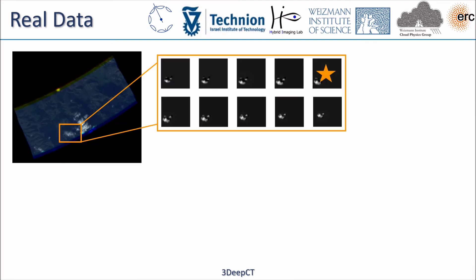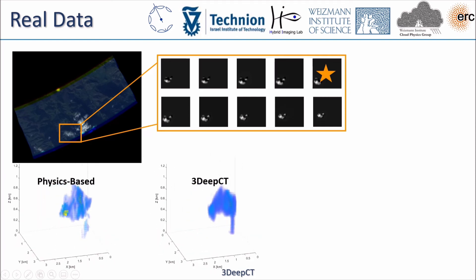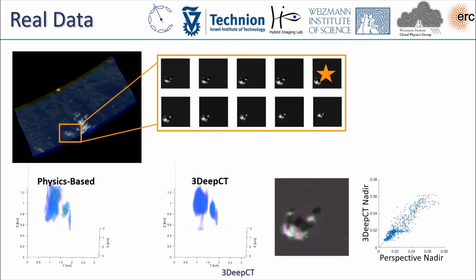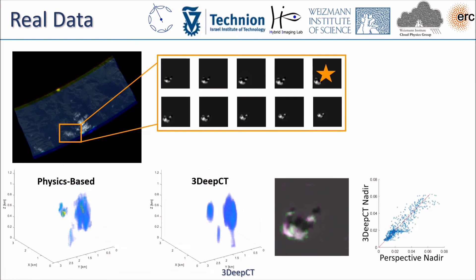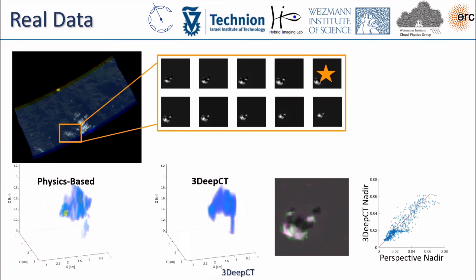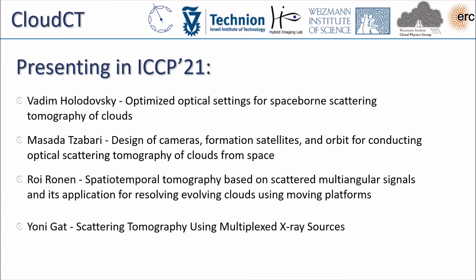Currently, there are no real simultaneous multi-view satellite images of clouds. For consistency with the perspective of 3DEEPCT, we took clouds appearing in AirMISPI data, applied physics-based inverse rendering, and rendered them perspectively. We present cross-validation results. We left out the nadir view and used the 3DEEPCT model to reconstruct the 3D cloud. From this reconstruction, we rendered the estimated left-out nadir view and compared it to the original one.